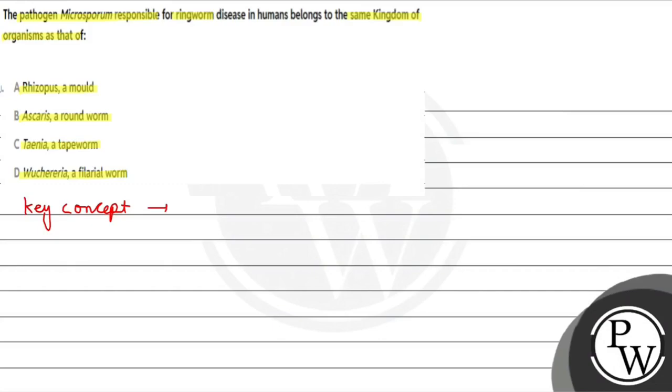That is biological classification. When we do biological classification, I know that Whittaker has given 5 kingdom classification. What did he give? 5 kingdom classification.